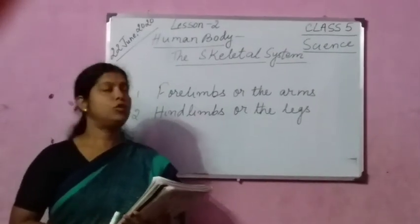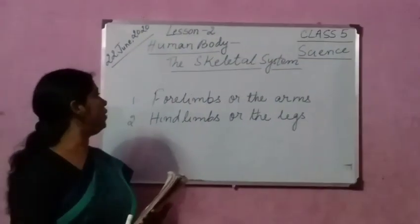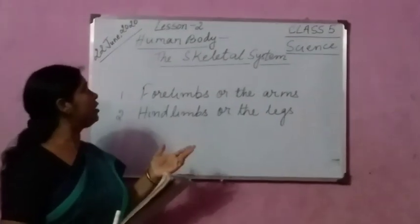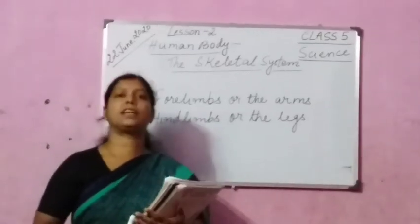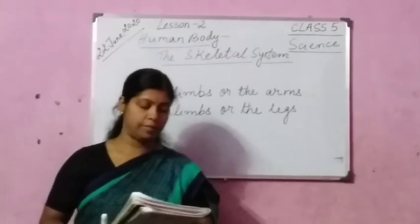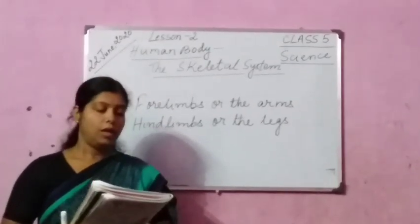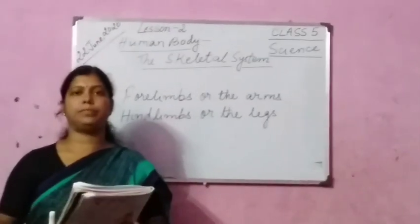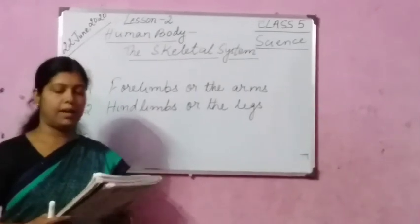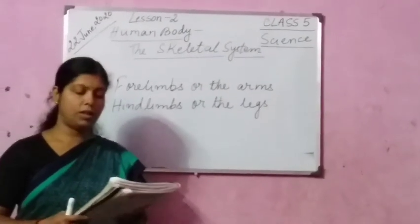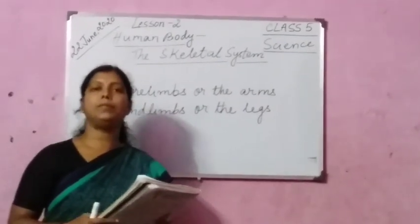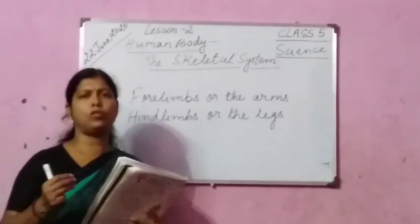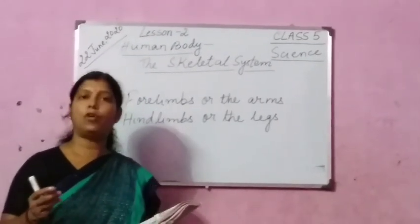Good morning children. Today we will continue with forelimbs or the arms and hind limbs or the legs in the human body, the skeletal system. Human beings have two pairs of limbs. They are the forelimbs or the arms and the hind limbs or the legs. First we are going to discuss about forelimbs.